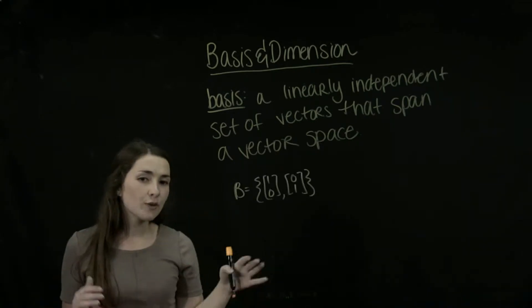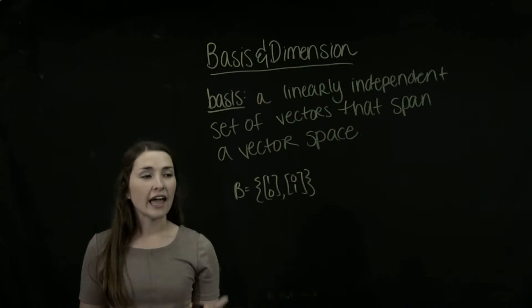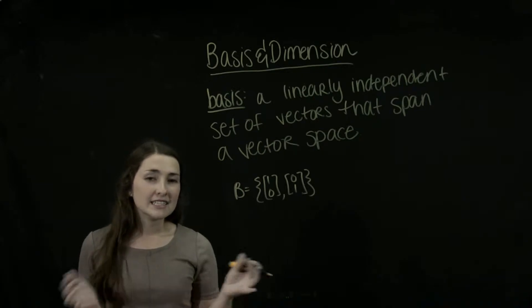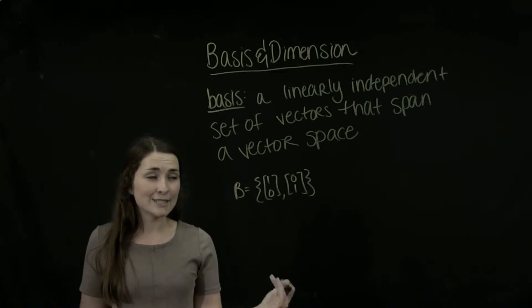So let's look at an example. So we have this set here, B, and it's equal to the vectors 1, 0 and 0, 1. Does this form a basis for R2?